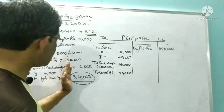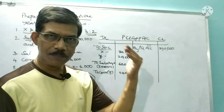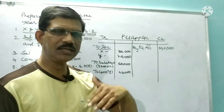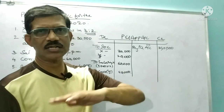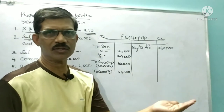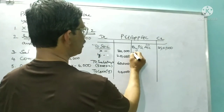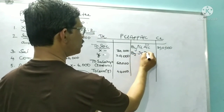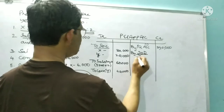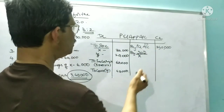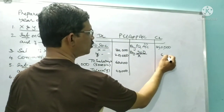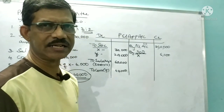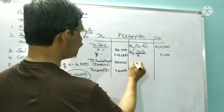Interest on drawings means partners have withdrawn amounts from the firm and are paying interest to the firm, so that is income to the firm shown on the credit side. The firm received from X: 6,000 rupees interest on drawings, and from Y: 4,000 rupees.